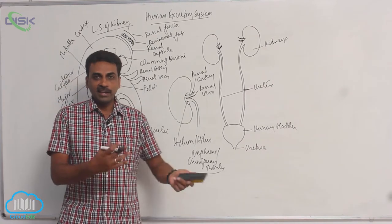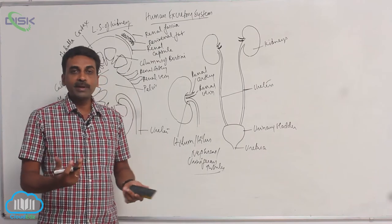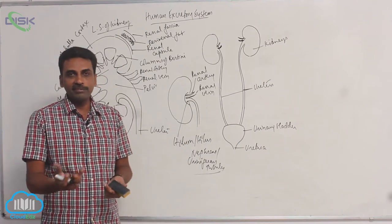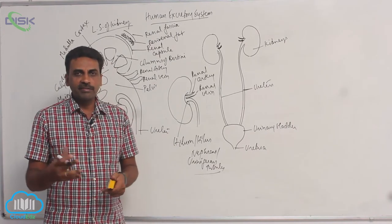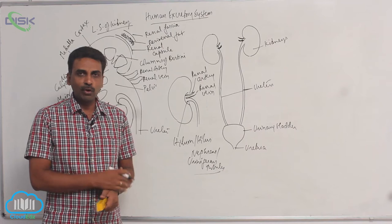Now with advancing age, gradually at a rate of 1% after 45-50, with advancing age, gradually 1% of nephrons keep on reducing over a period of time.